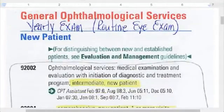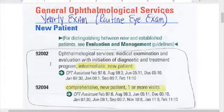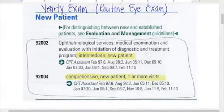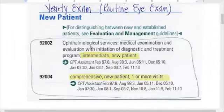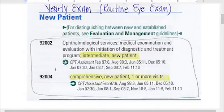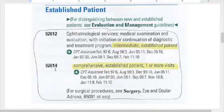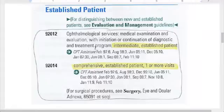Here it is in my CPT book. Ophthalmological services — that's basically your eye codes. Medical exam and evaluation with initiation of diagnostic and treatment programs — that's before the semicolon. Then intermediate and comprehensive are the two new patient codes. And then we've got 92012 and 92014: these are intermediate for established patients and comprehensive for established patients, with initiation or continuation of diagnostic and treatment program.